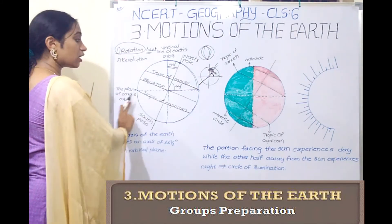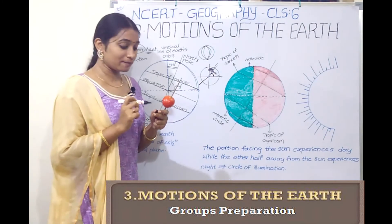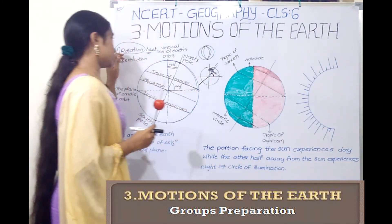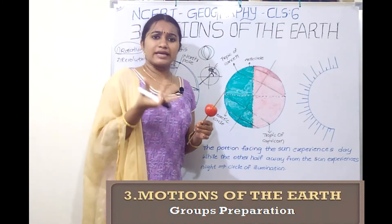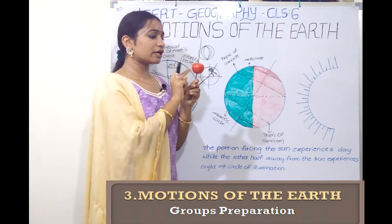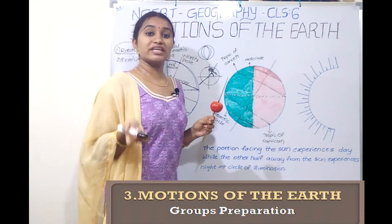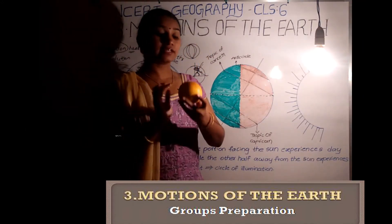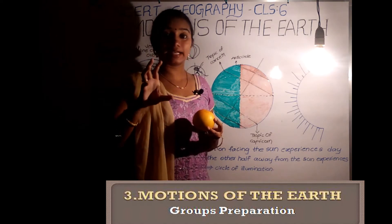This is the plane of the Earth's orbit, which is the horizontal line, and this is the vertical line. So now we will see about rotation. What is rotation? When the Earth rotates, we experience changes in day and night.